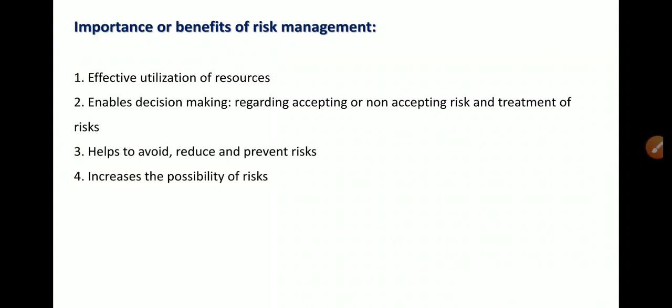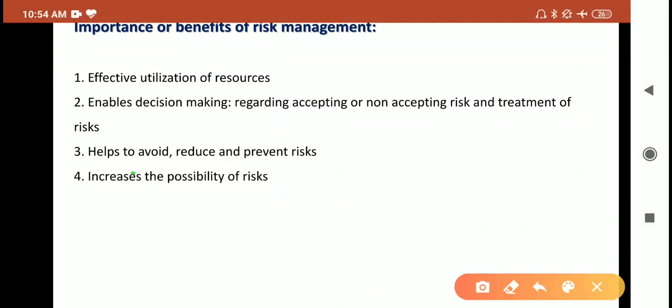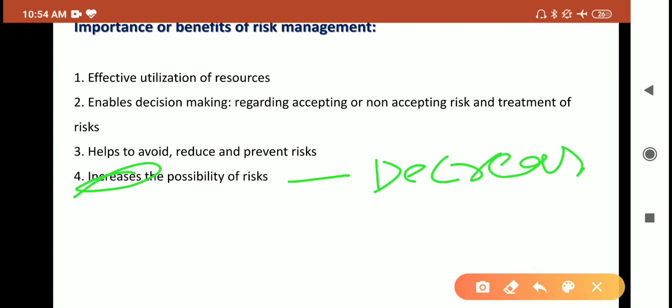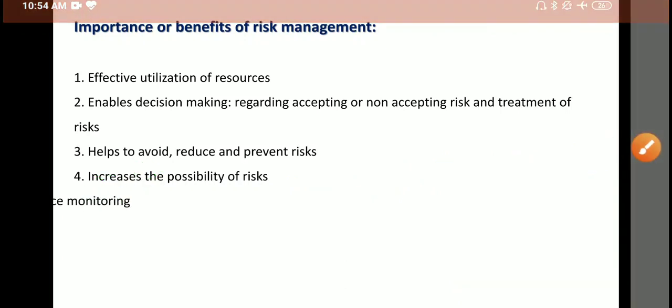The fourth benefit is it decreases the possibility of risk. Risk management helps to decrease or mitigate the risk which exists in the activities of the business. Business management helps to reduce the possibility of risk in the organization.